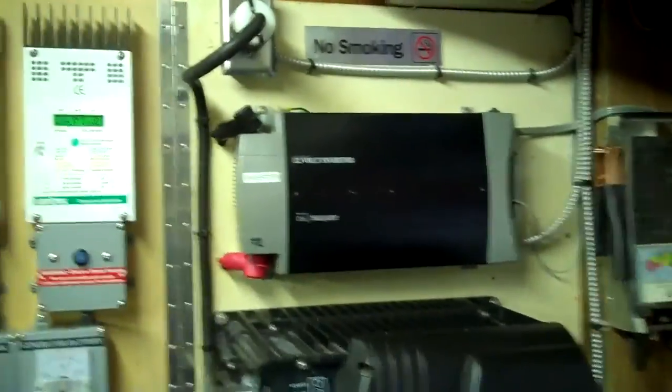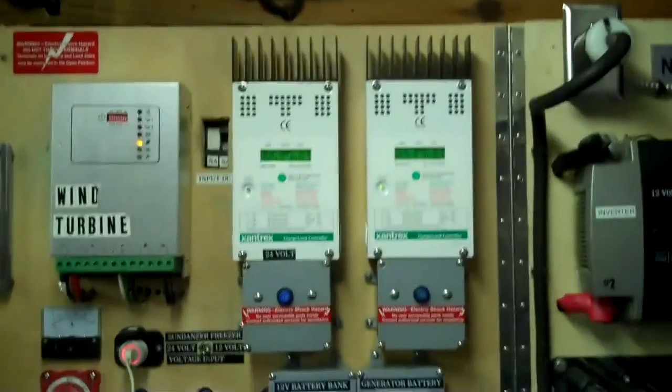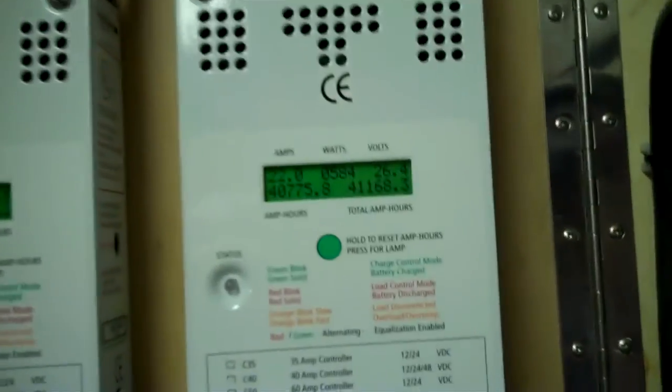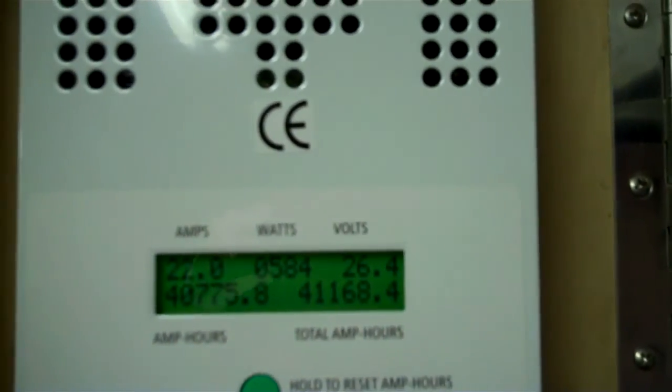It's about 4:30 in the afternoon and I noticed that I'm having a little problem with my solar array. This is one of the nice things about having two charge controllers. You can see this array here is putting out 584 and this is the newer one.